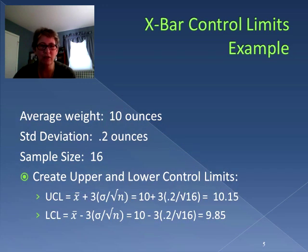The average weight, the mean, is 10 ounces. The standard deviation for the population is 0.2 ounces and we're using a sample size of 16. So to create the upper and lower control limits, we're going to take the mean and add to it three standard deviations above the mean, but remember we have to calculate that standard deviation by using the population standard deviation of 0.2 and dividing it by the square root of the sample size 16. So we have 10 plus 3 times 0.2 divided by the square root of 16, which is 10.15.